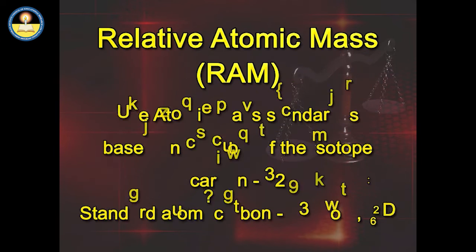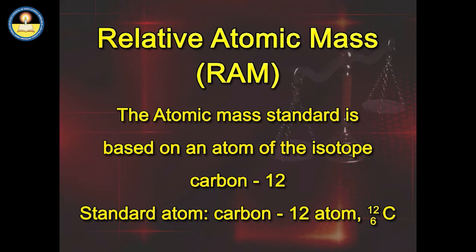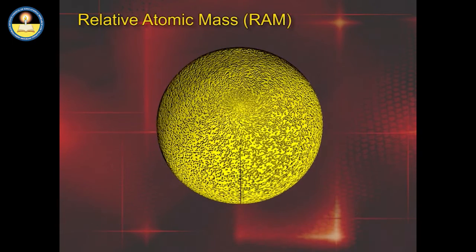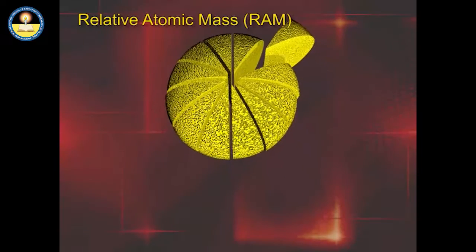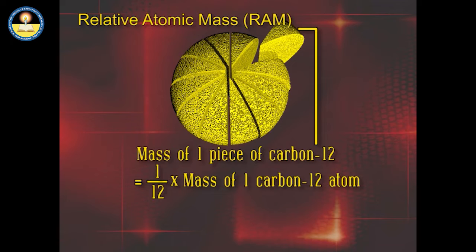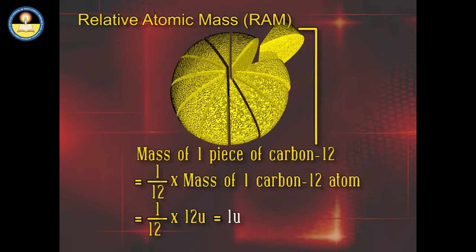Relative Atomic Mass — the atomic mass standard is based on an atom of the isotope carbon-12, represented as ¹²C₆. The mass of one carbon-12 atom is equal to 12U. If this carbon atom is cut into 12 equal pieces, the mass of one piece is equal to 1/12 times 12U, which equals 1U.